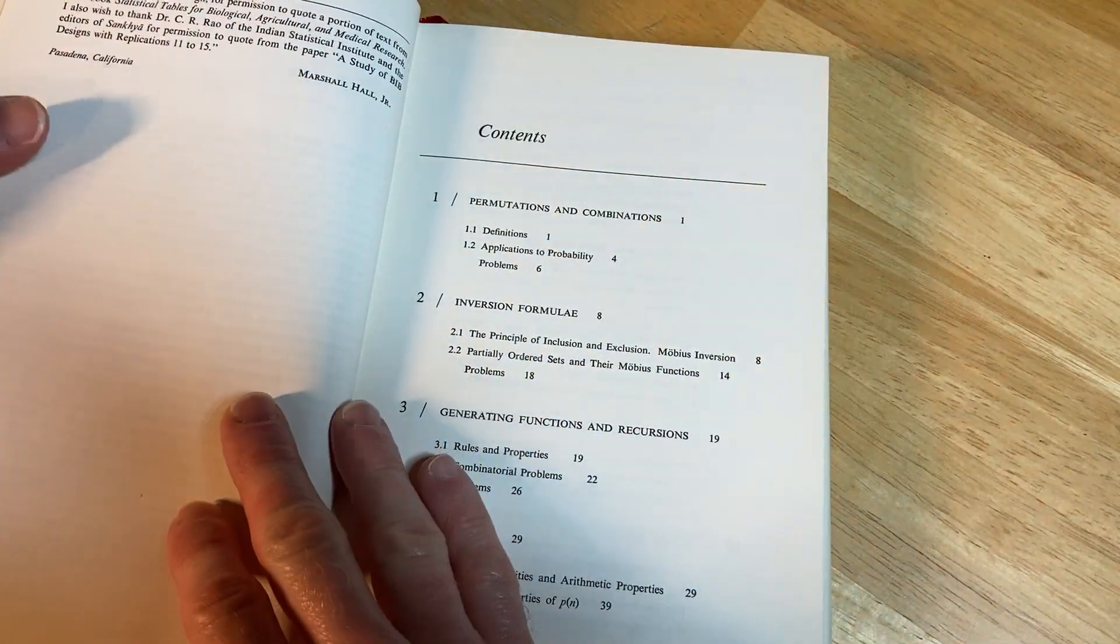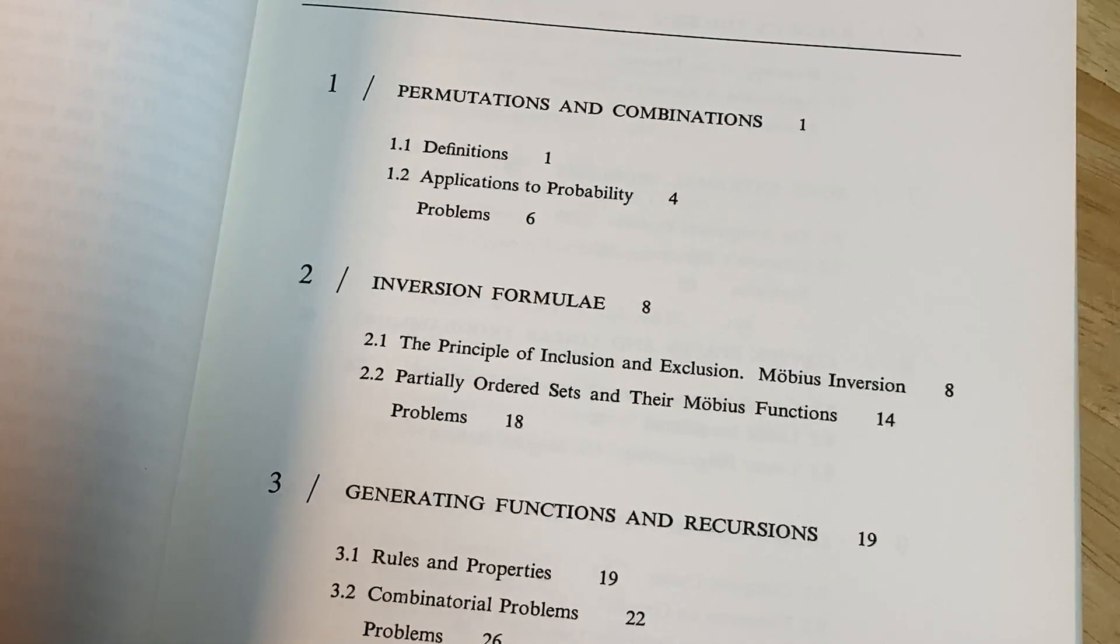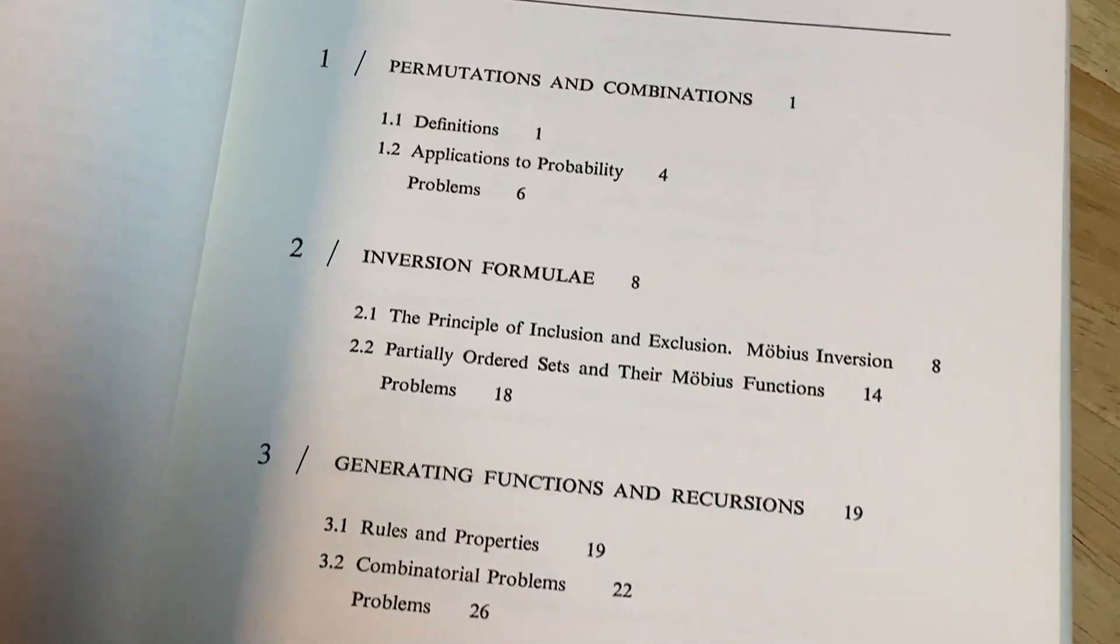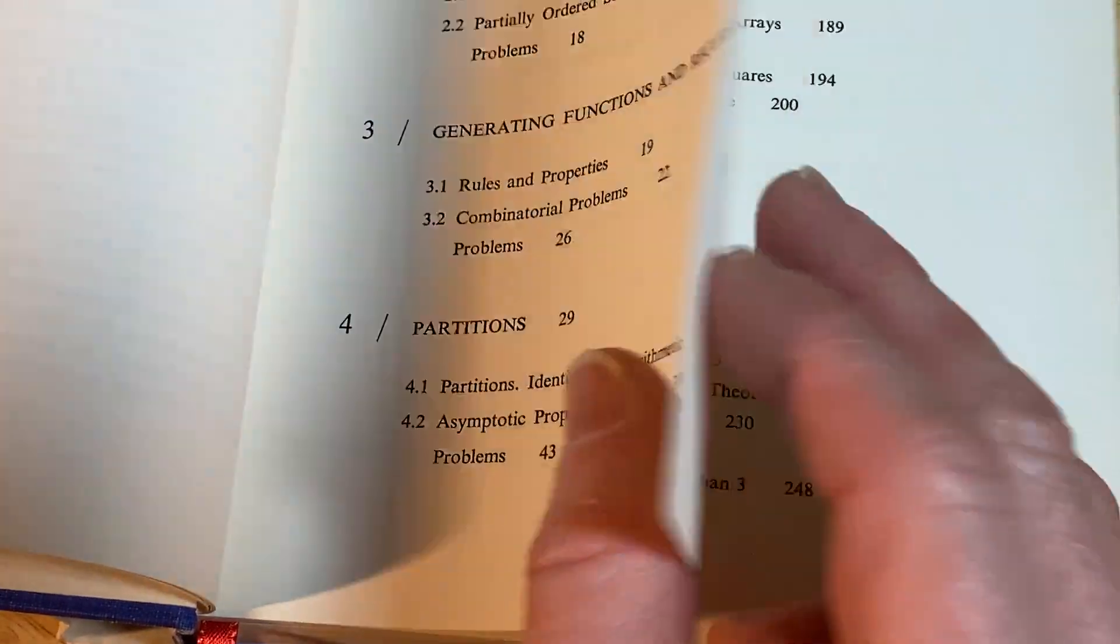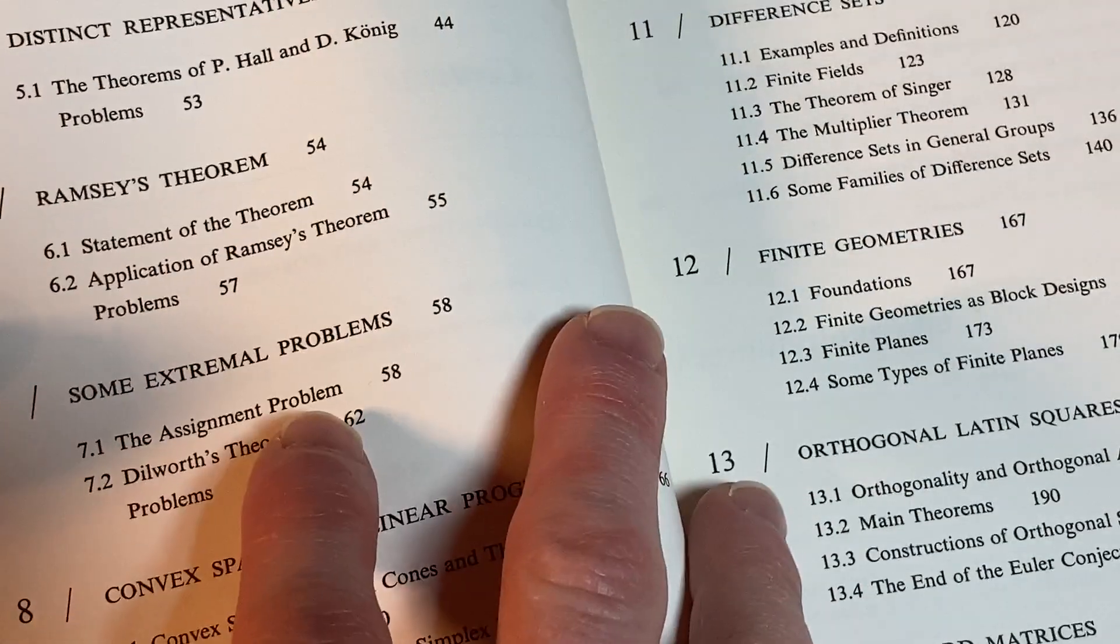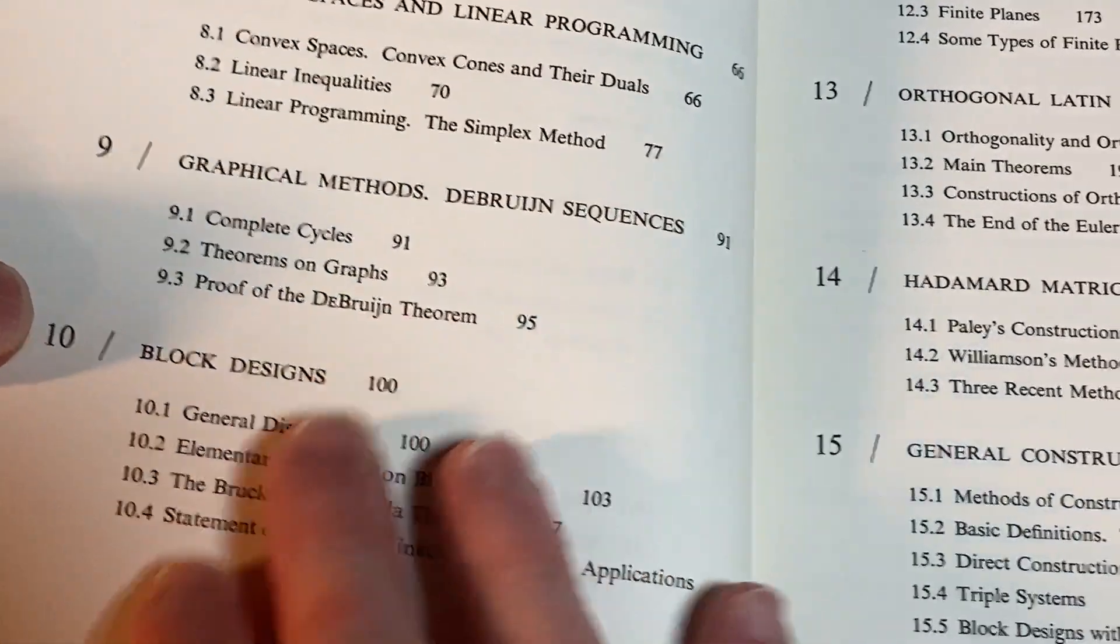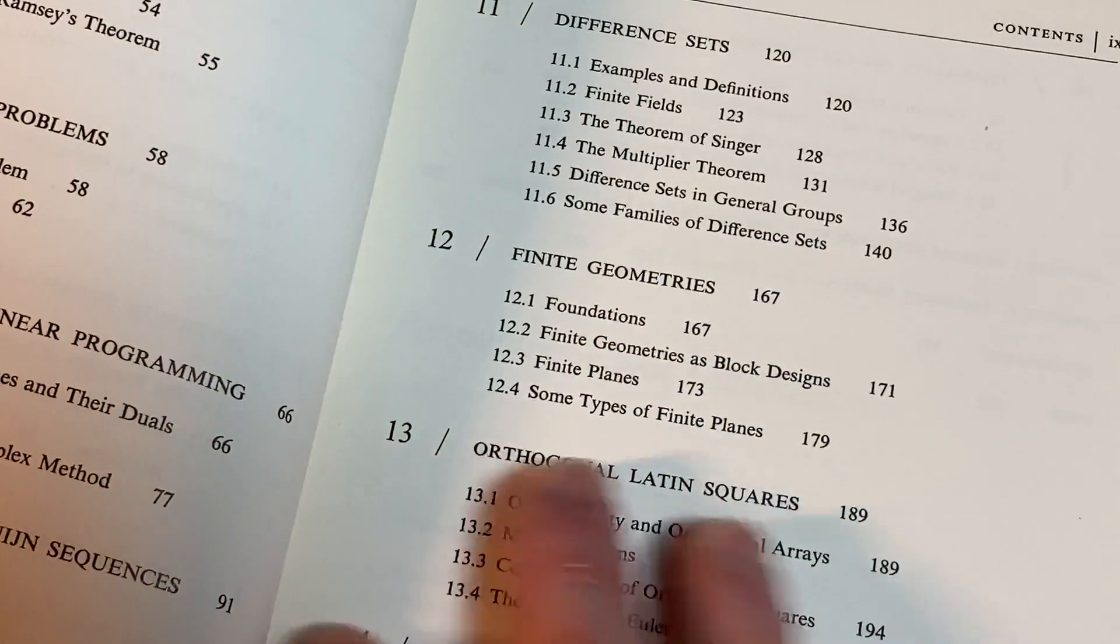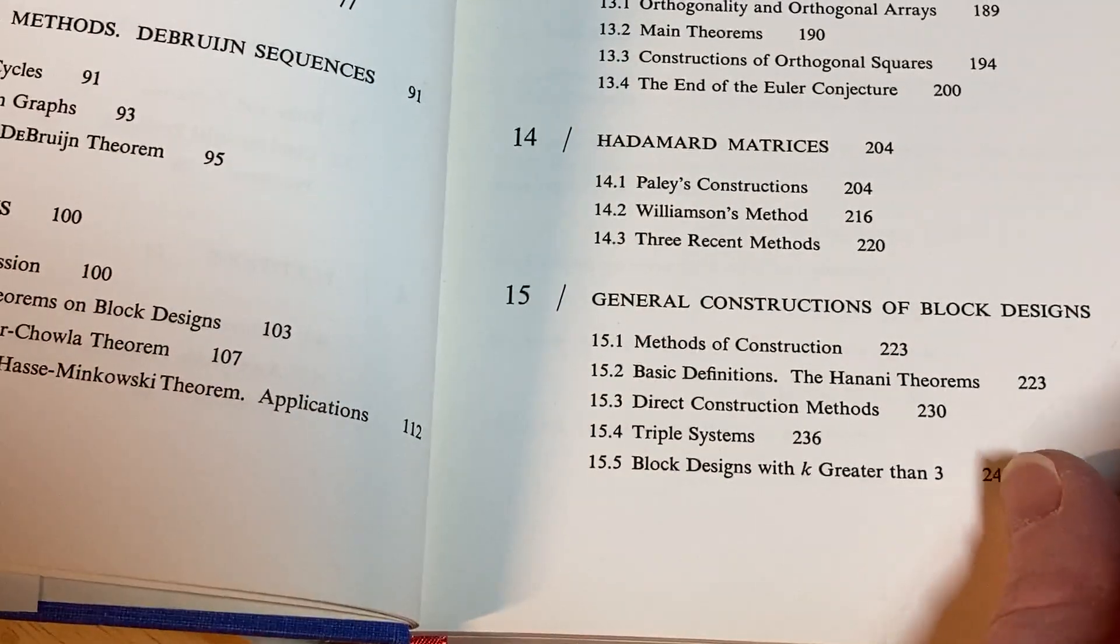And then here are the contents. So it starts with permutations and combinations. You've probably seen those. Inversion formulae. Then generating functions and recursions. Then it goes to partitions. Here we have distinct representatives, Ramsey's theorem, some extremal problems, convex spaces and linear programming, graphical methods, De Bruijn sequences, block designs, different sets, finite geometries, orthogonal Latin squares, Hadamard matrices, general constructions of block designs, and then we have theorems on completion and embedding here at the end.